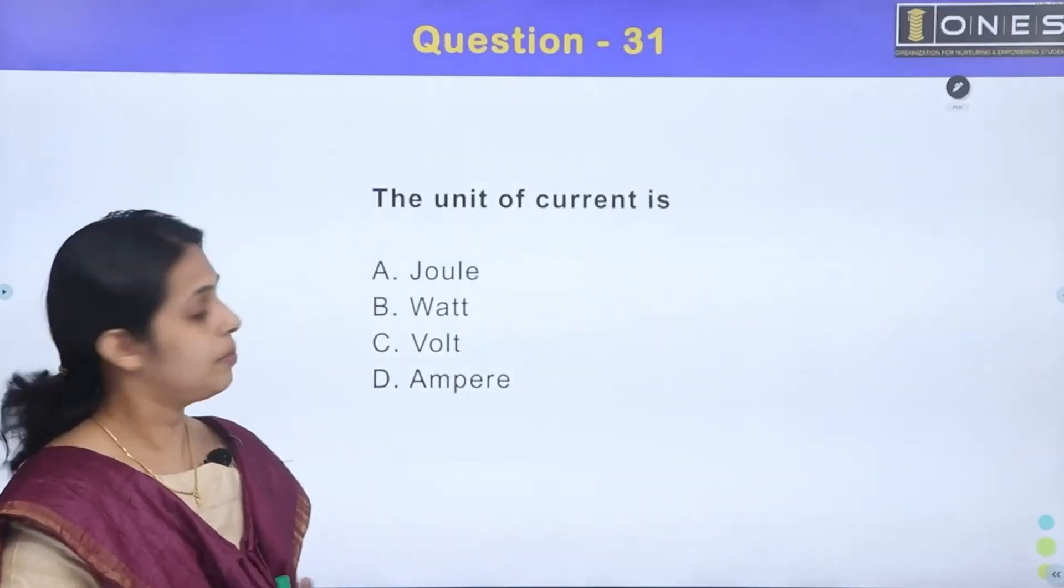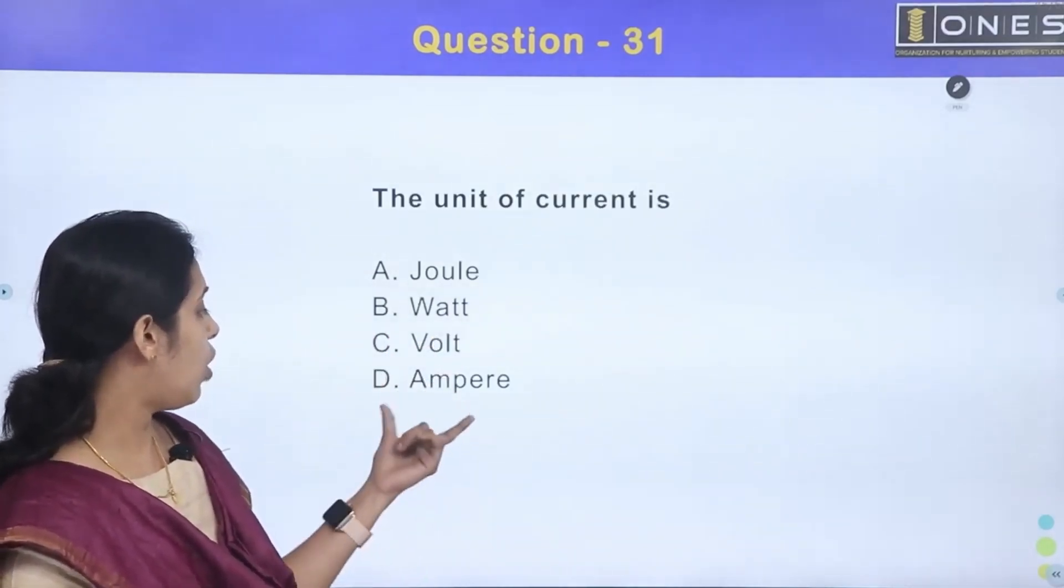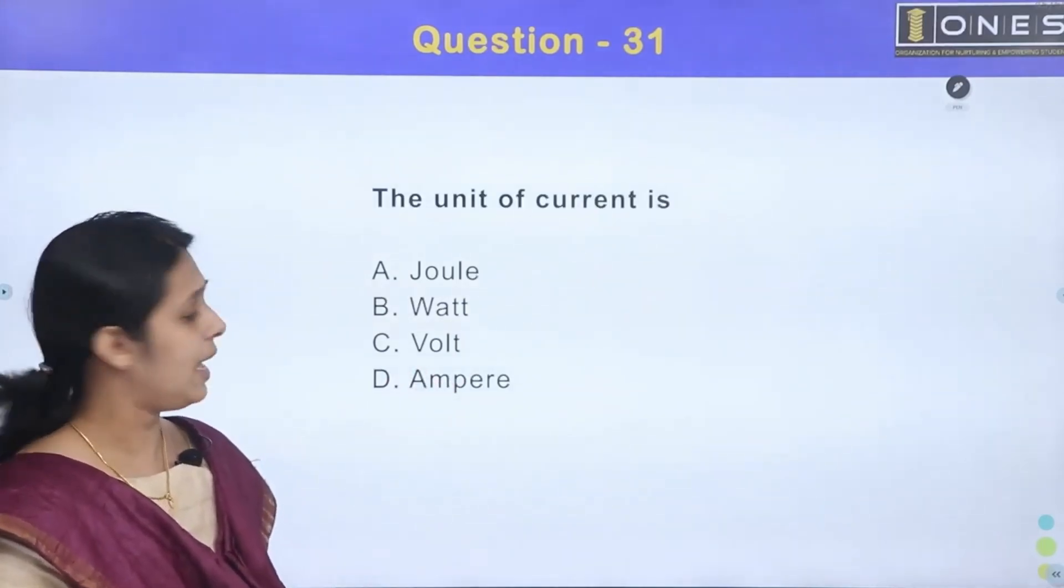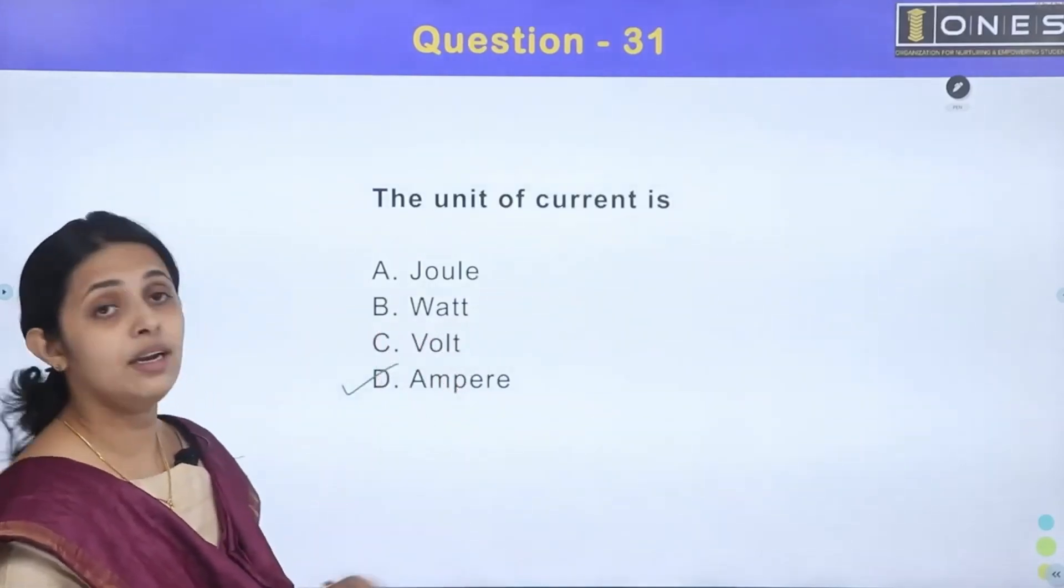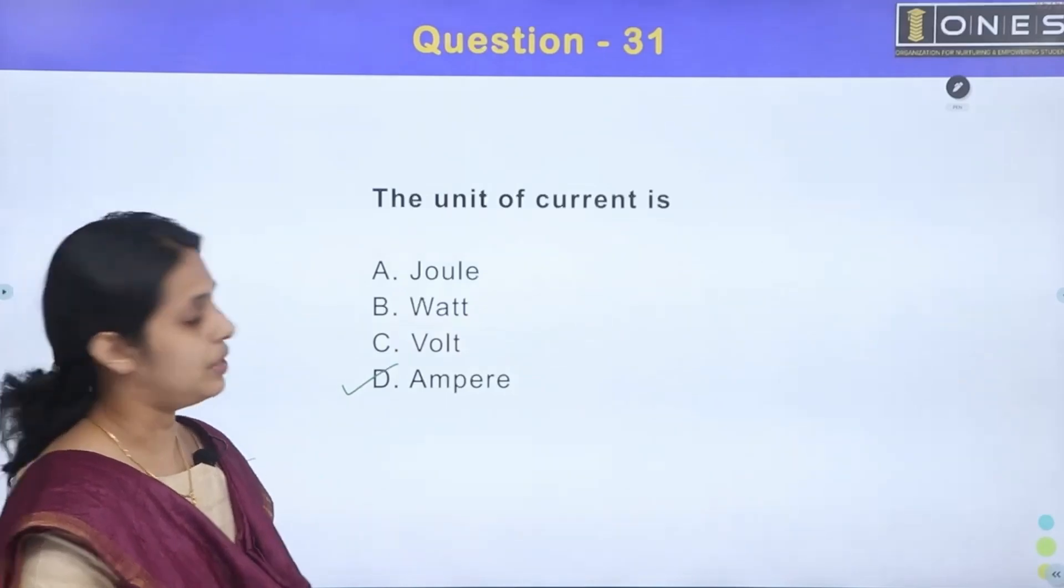The unit of current is Option A Joule, Option B Watt, Option C Volt, Option D Ampere. Current unit is Ampere, right? So we have Option D. Ampere. Volt is the voltage unit, Watt is the power unit, Joule is the energy unit.